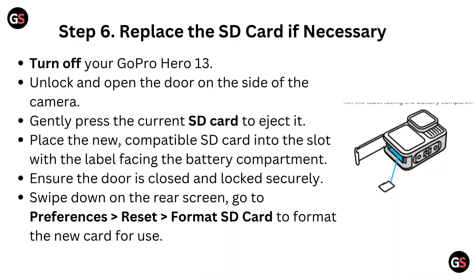Step 6, replace the SD card if necessary. Turn off your GoPro Hero 13, unlock and open the door on the side of the camera. Gently press the current SD card to eject it. Place the new compatible SD card into the slot with the label facing the battery compartment. Ensure the door is closed and locked securely. Swipe down on the rear screen, go to Preferences, then Reset, then Format SD card to format the new card for use.